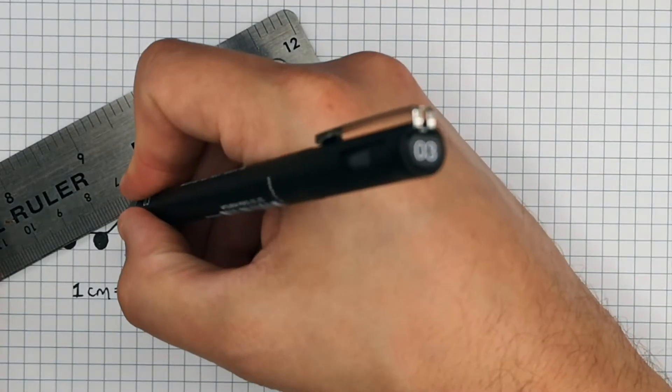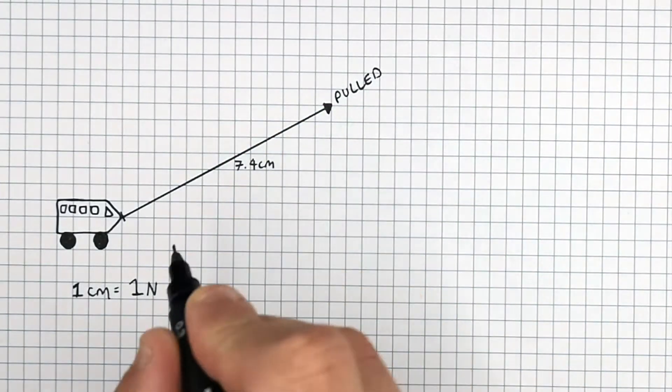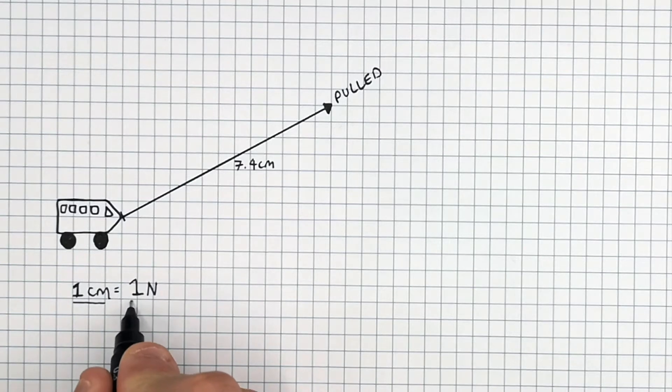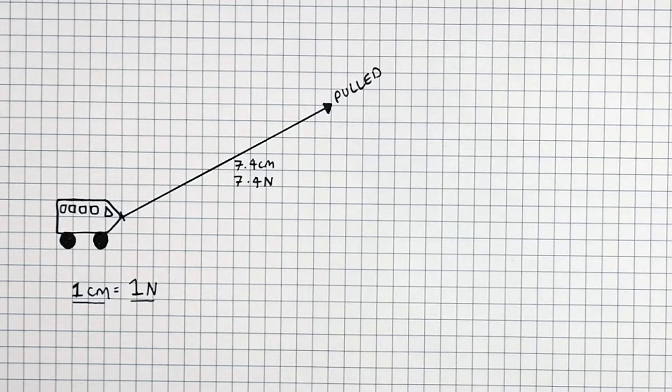The single diagonal component acting on this car is 7.4 newtons, because one centimeter equals one newton. You can resolve this force by splitting it into the two components.